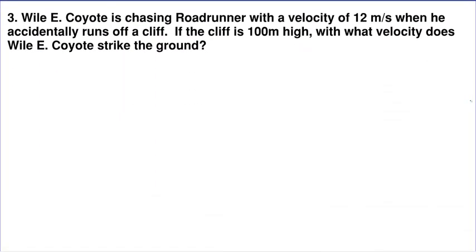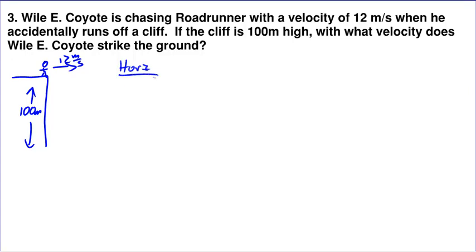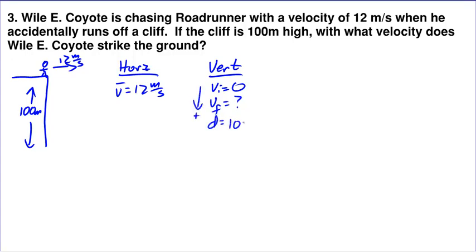Let's go to number 3. Wiley Coyote is chasing Roadrunner with a velocity of 12 meters per second when he accidentally runs off a cliff. He's going 12 meters per second off a 100 meter cliff. What velocity does Wiley Coyote strike the ground? Horizontally, Wiley Coyote has a velocity of 12 meters per second — that's going to remain the same. Vertically, let's figure out what his velocity is. His initial vertical velocity is 0 again, and we want to find Vf. The displacement, calling down positive, is 100 meters.